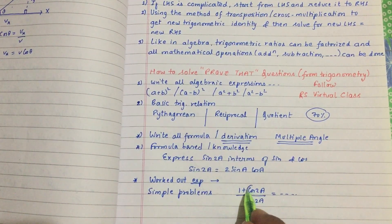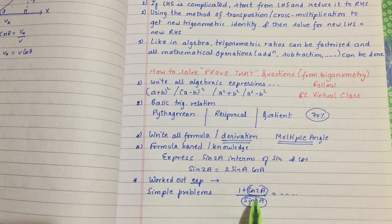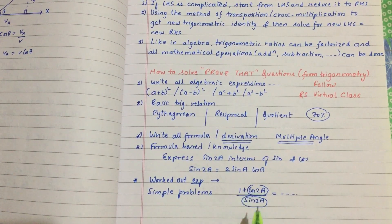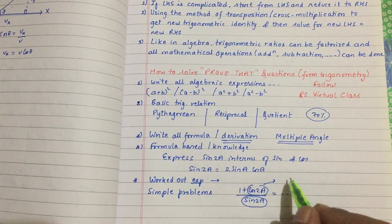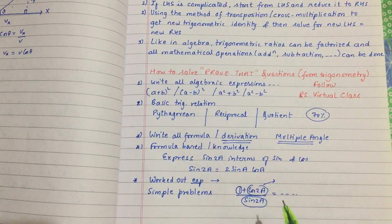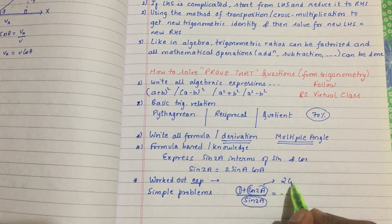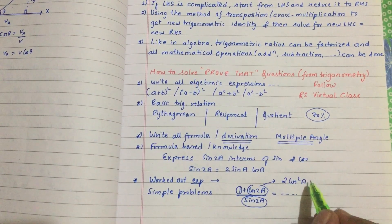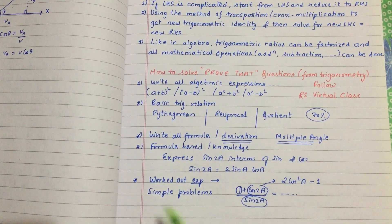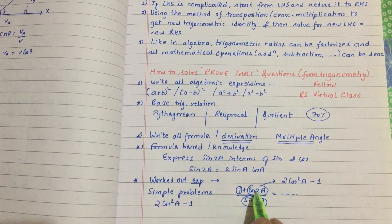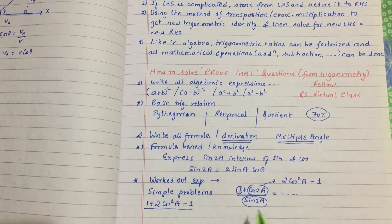If you want to see the 1-2-2-a, you can apply the formula and cut the formula. The formula is very important, but you can apply the formula and cut it. So, 2cos²a minus 1 — we have the example of this formula. 2cos²a minus 1, cos2a, plus 1, divided by sin2a.